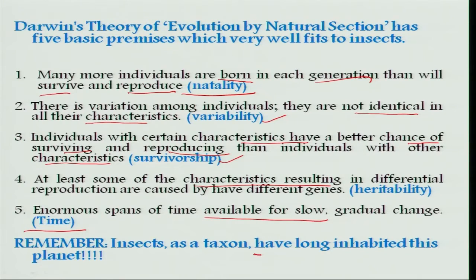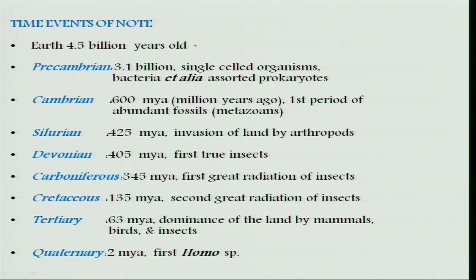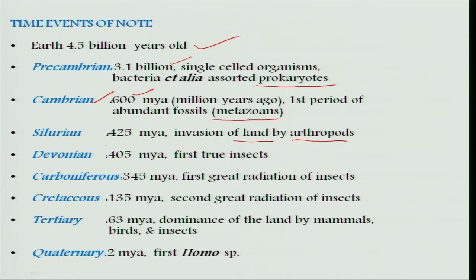Insects as a taxon have inhabited this planet for a very long time. The Earth is 4.5 billion years old, and the first living cells in the form of single-celled prokaryotes originated during the pre-Cambrian period around 3.1 billion years ago. Multicellular organisms first appeared 600 million years ago during the Cambrian period. Arthropods moved from aquatic to land ecosystems around 425 million years ago during the Silurian period, and the first evidence of true insects appears around the Devonian period, approximately 400 million years ago.